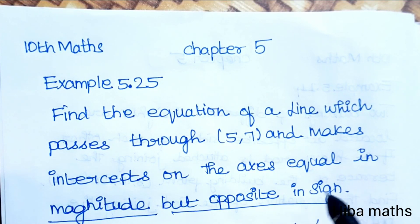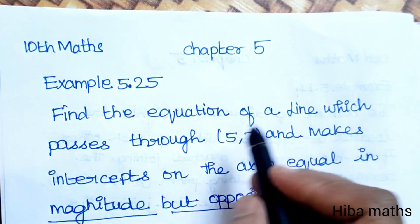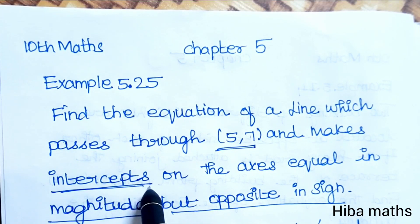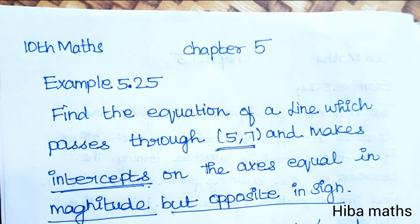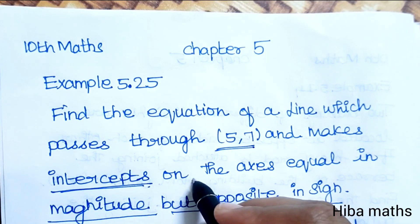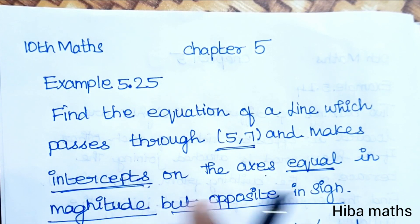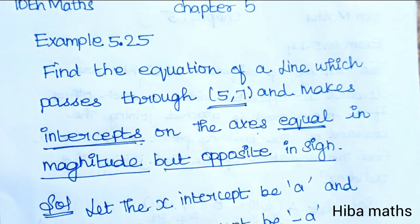This is an important type of problem - equation of a line passes through a point and makes intercepts. The intercept formula is used when intercepts are equal in magnitude. Here is 5 and here is 5, but opposite in sign - plus 5 and minus 5.